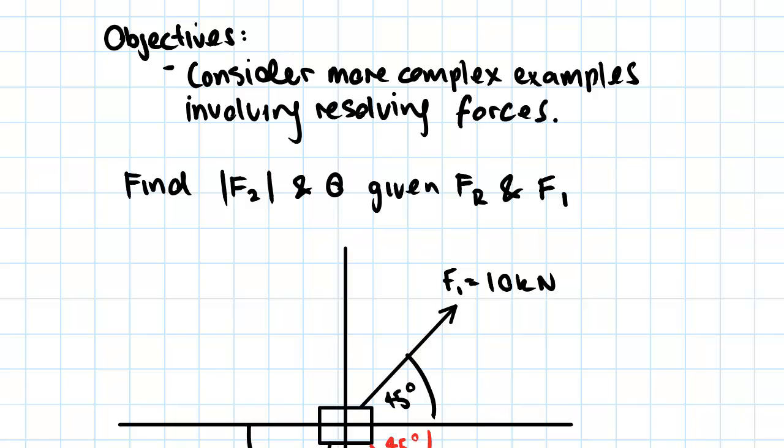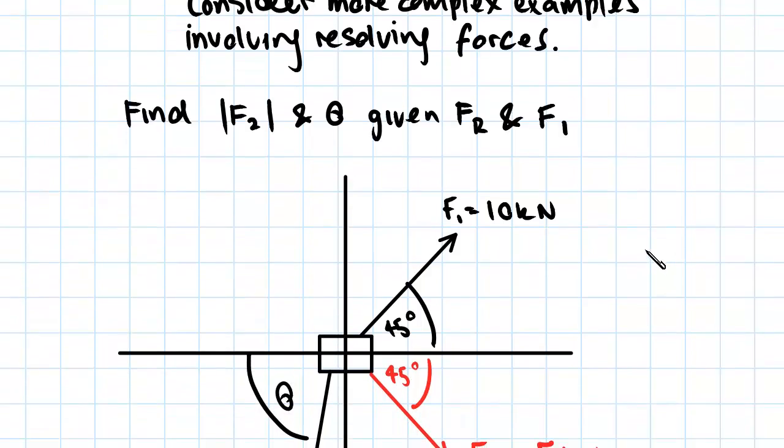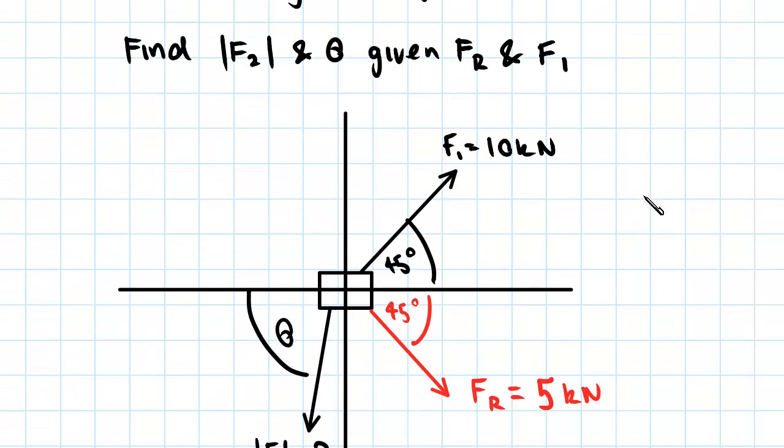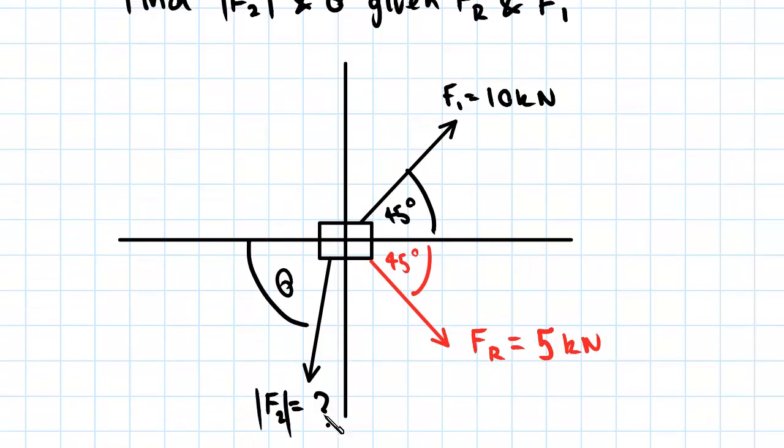So the example we've got here is we have some kind of a block in the middle and it is being pulled by two forces. We know F1 equals 10 kilonewtons and F2 we've been asked to find.